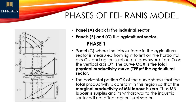Panel A is the industrial sector graph where the horizontal axis measures labour force and the vertical axis measures wages and marginal output. Panel B is the agriculture sector graph with labour force on the horizontal axis and average output and marginal output on the vertical axis. Panel C measures total output on the vertical axis and labour force on the horizontal axis. The curve OCX represents the total physical productivity curve of the agriculture sector.